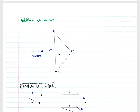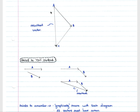When adding vectors, if one force is applied from A to B and another from B to C, the resultant force is AC. Using the head-to-tail method, you take the first force AB, connect the second vector's tail to the head of the first vector, and draw the resultant from the tail of the first vector to the head of the last vector, giving you the resultant vector.